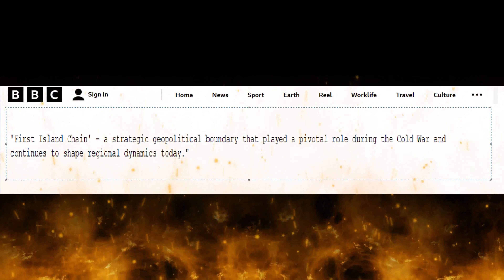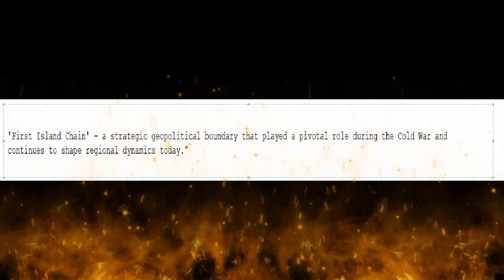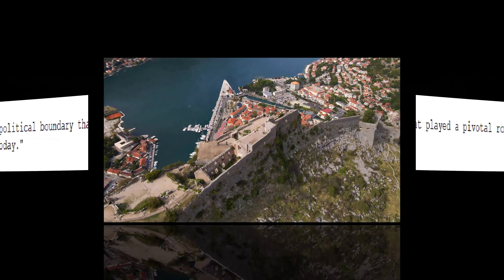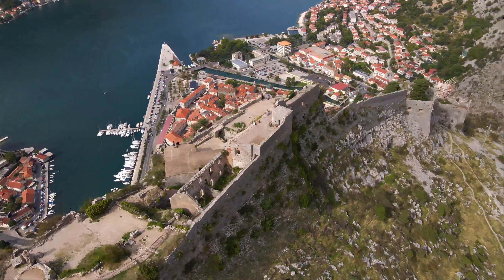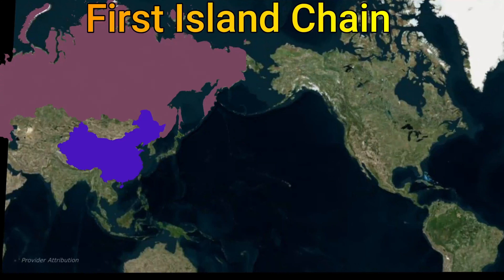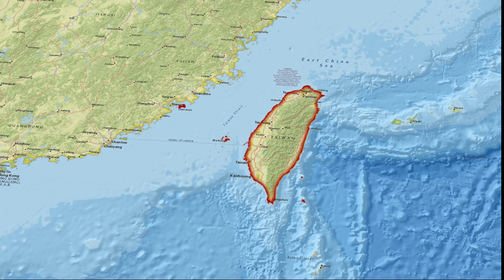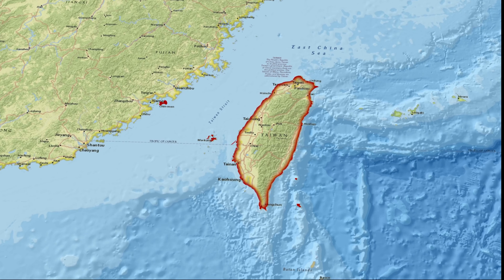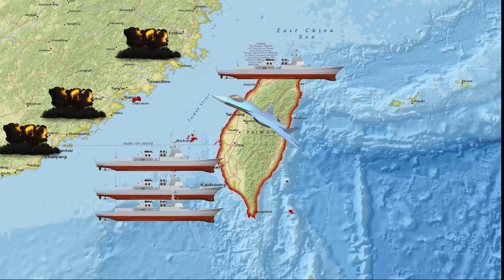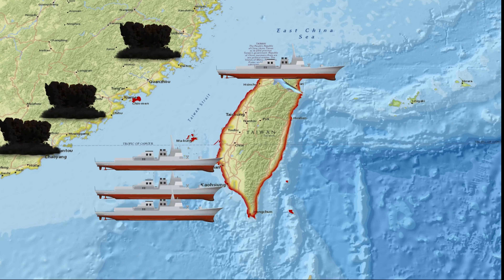The first island chain is a strategic geopolitical boundary that played a pivotal role during the Cold War and continues to shape regional dynamics today. Beginning at the Kuril Islands and weaving through the Japanese archipelago, the Ryukyu Islands, Taiwan, and extending southward to Borneo, this strategic belt was conceptualized as the first line of defense against the expansion of Soviet influence in East and Southeast Asia. At the heart of the first island chain lies Taiwan — a midpoint and key element in this strategic barrier, earning the term 'unsinkable aircraft carrier.'